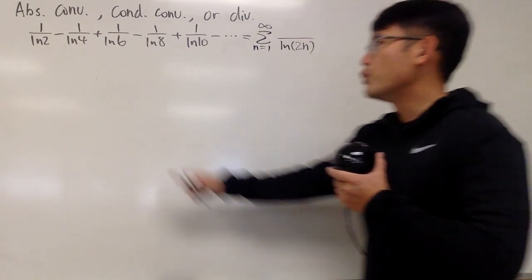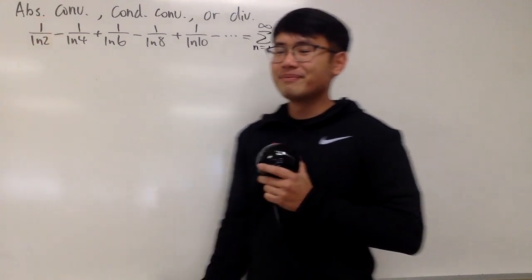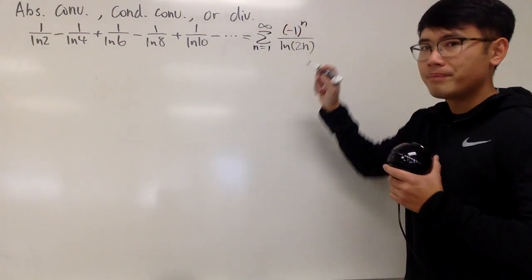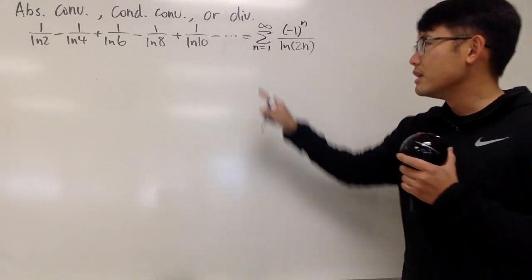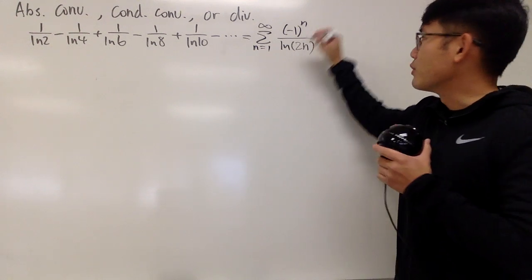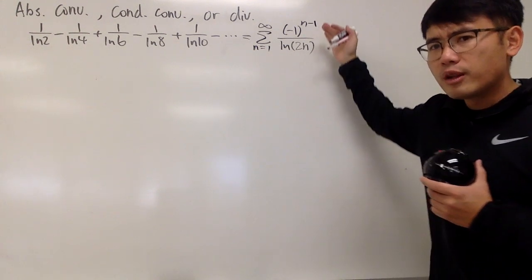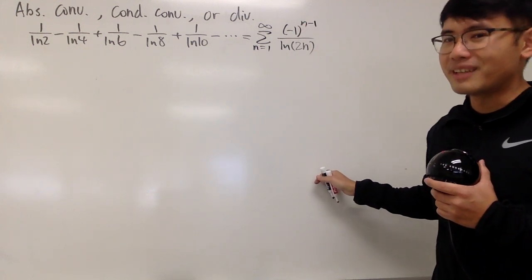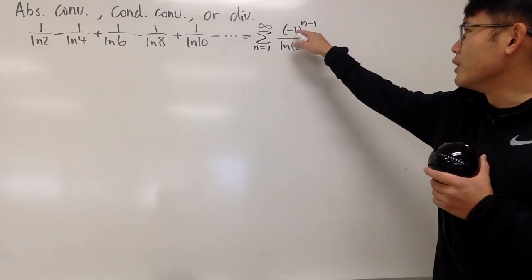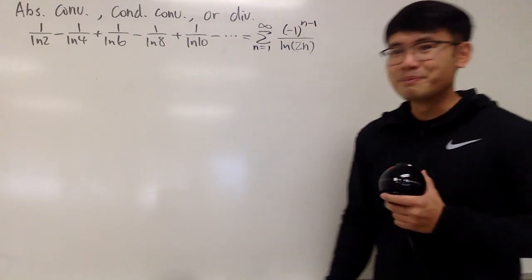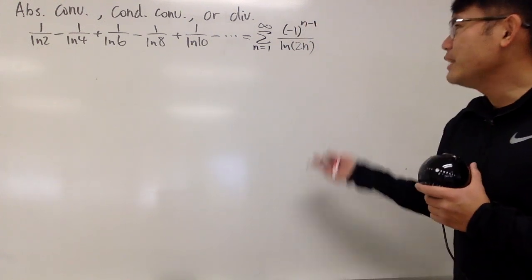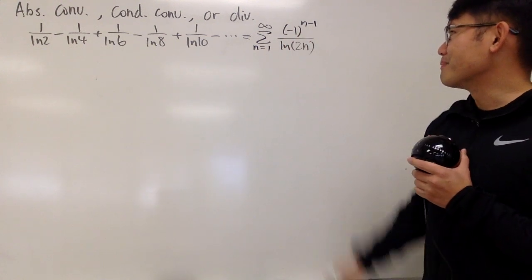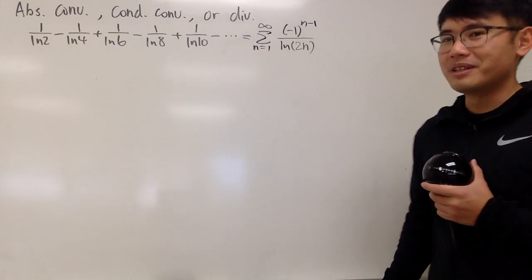On the top, we want the positive term first, then negative, and so on. So we put down negative 1 to the n-1 power. Since n goes from 1, you have to make sure you do n minus 1. You can also do n plus 1 — that still gives you a positive term first. You can even do negative 1 to the n minus 17 — it doesn't really matter.